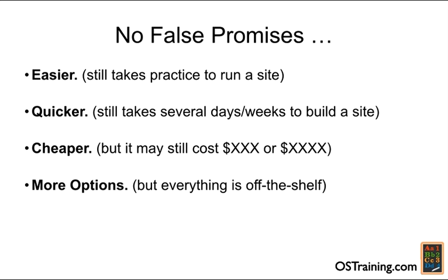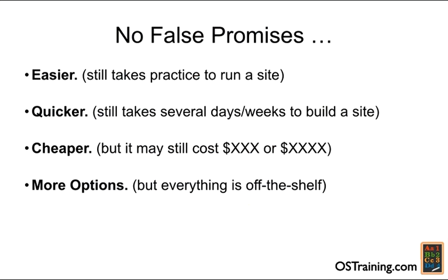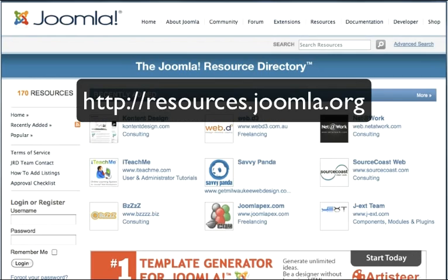Finally, there are more options with Joomla. It's incredible to see the number of extensions — but everything is off the shelf, which means you're at the mercy of the extension developers. With over 3,500 extensions available in the Joomla extensions directory, plus many more from other websites, the probability that you'll find exactly what you need is pretty high. Of course, there are developers who will custom develop extensions for you. To find those, just go to Joomla.org and look at the developer community.